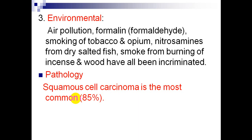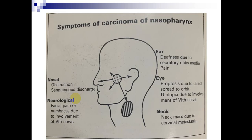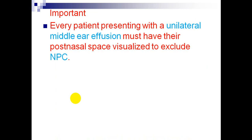Pathology: squamous cell carcinoma is the most common type at 85%. Symptoms of nasopharyngeal carcinoma include nasal symptoms (nasal obstruction and blood-stained discharge), ear symptoms (deafness due to secretory otitis media and pain), neck symptoms (neck mass due to cervical metastasis), neurological features (facial pain or numbness due to involvement of the trigeminal nerve), and eye features (proptosis due to direct spread to the orbit or diplopia due to involvement of the abducent nerve). Important note: every patient presenting with a unilateral middle ear effusion must have their postnasal space visualized to exclude nasopharyngeal carcinoma.